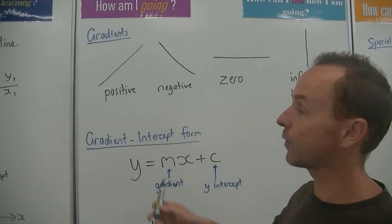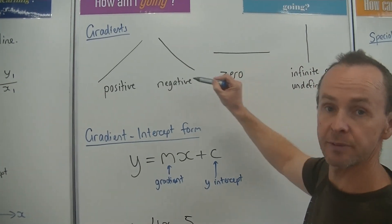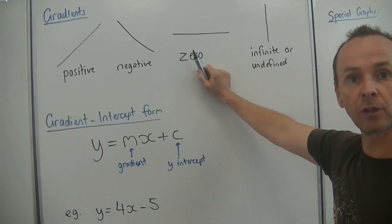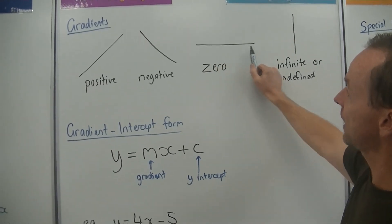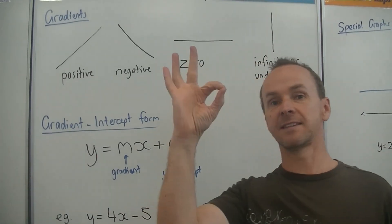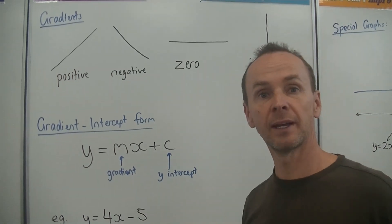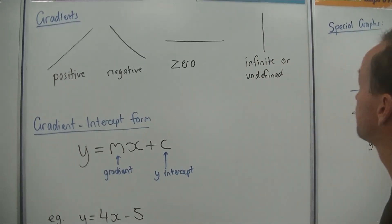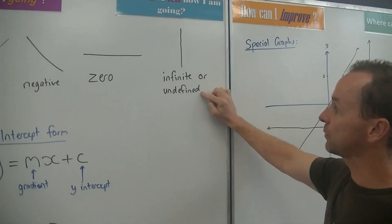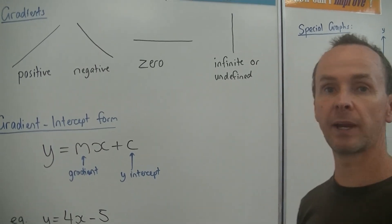Gradients: a positive gradient slopes upward in that direction. A negative gradient slopes down when you're going left to right. Now remember, the gradient is the steepness of a line. So if a line is horizontal like that, it has no steepness, so its gradient is zero — like the floor, if it's flat it's a zero gradient. And the last one: a vertical line has either an infinite gradient, or sometimes it's called undefined. Same thing in a test — you'll get a mark for either answer.